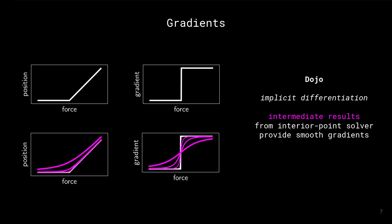With DOJO, we formulate the contact simulation problem as an optimization problem. Thus, we leverage the implicit function theorem to differentiate through contact simulation. By reusing intermediate results from the interpoint solver, we can provide smooth gradients while still simulating hard contact.